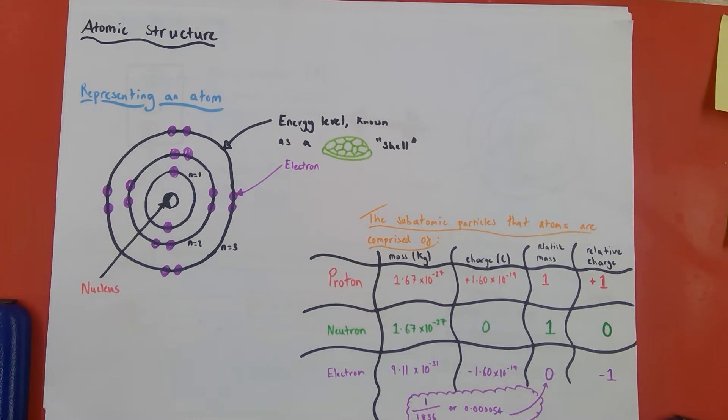He then thought about the atom as a model again, and thought they might be like a plum pudding of these electrons, surrounded by a vague, nebulous cloud of positive charge.